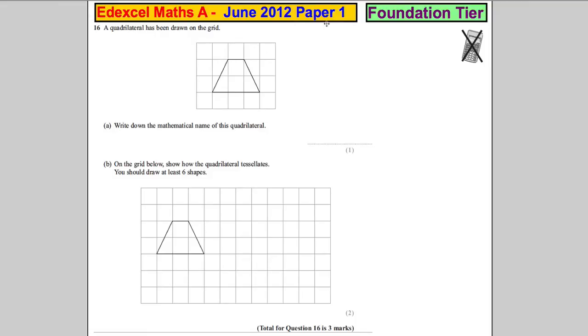A quadrilateral has been drawn for you. Write down the name of this shape. This is a trapezium. There's actually one of these given in the formula booklet for you. A trapezium has one pair of sides that are parallel; the other two sides aren't parallel. On the grid below, show how the quadrilateral tessellates. You should draw at least six shapes.